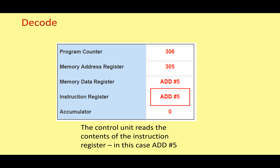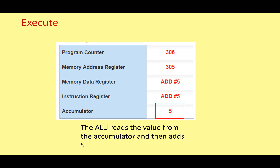Now we move on to the decode stage of the fetch-decode-execute cycle. Here the control unit reads the contents of the instruction register — which is of course 'add five'. We then move on to the execute stage, because 'add five' is an instruction the control unit understands. It's a mathematical operation, so we're going to use the ALU — the arithmetic logic unit — which reads the value from the accumulator and adds five. The accumulator therefore changes from zero and becomes five.